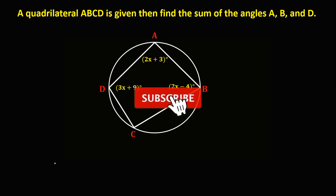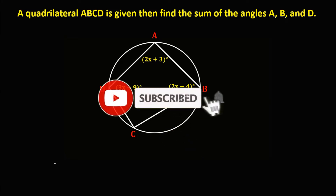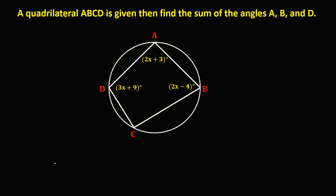Welcome to MathStoria. Let's have this problem. A quadrilateral ABCD is given — find the sum of angles A, B, and D.